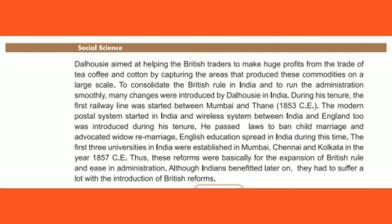Dalhousie aimed at helping British traders to earn huge profits from tea, coffee, and cotton — goods taken from India, manufactured, and sold back to India at high prices. To smooth their administration, Dalhousie brought several changes. For the first time, railway lines were built in India, between Mumbai and Thane in 1853 CE. Modern postal service was introduced, and a wireless telegraph system was established. He also passed laws to ban child marriage, the sati system, and restrictions on widow remarriage. English education was introduced and three universities were established in Mumbai, Chennai, and Kolkata by 1857 CE.